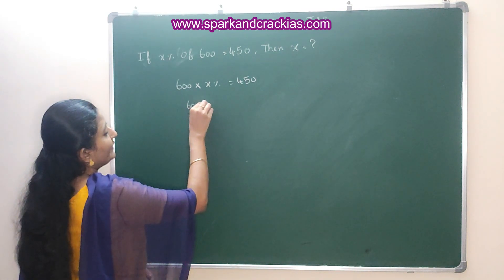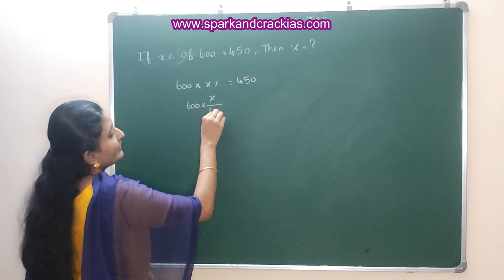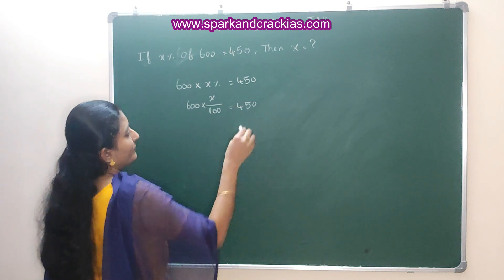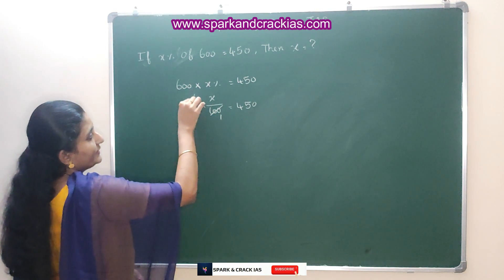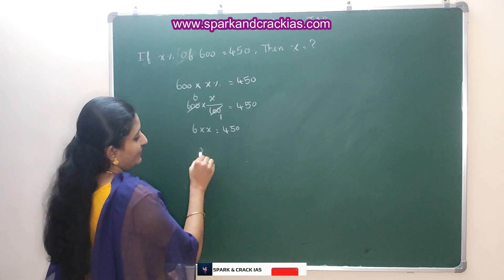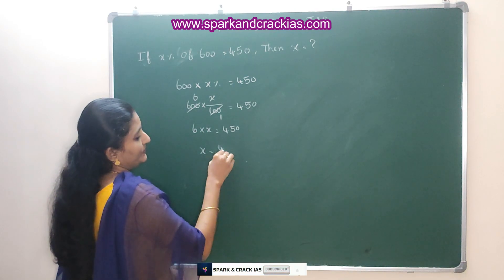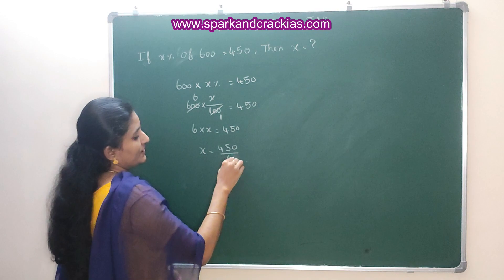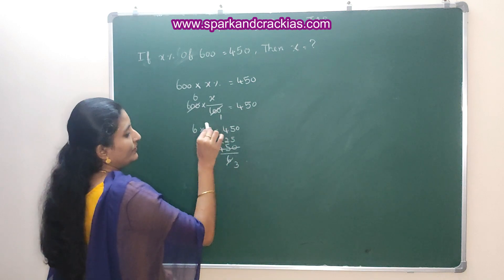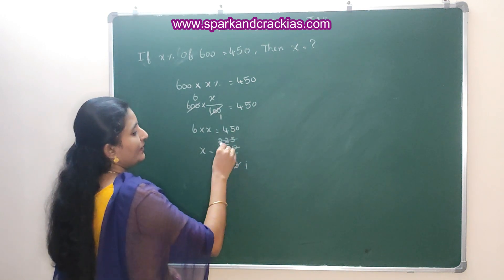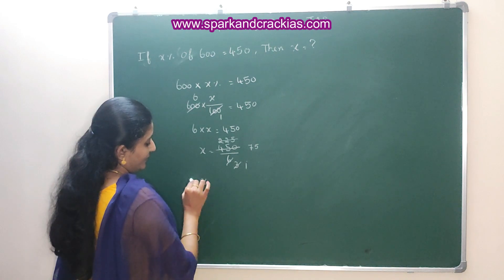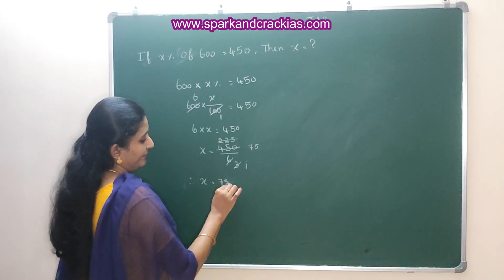So, 600 into x percent equal to 450. The value of x percent equals 450 divided accordingly — 13 is 3, 73 is 21, balance 1, 53 is 15. Therefore, x is equal to 25.